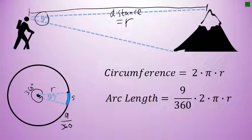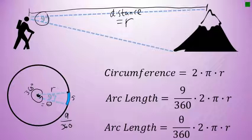In general, when it comes to a sector of a circle, whatever the central angle is — often abbreviated with theta — the arc length is theta over 360, where theta is the central angle, times 2 times pi times r. If we know the distance from the hiker to the mountain, we can approximate the height of the mountain using this arc length formula.